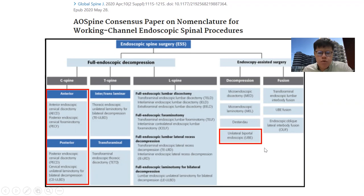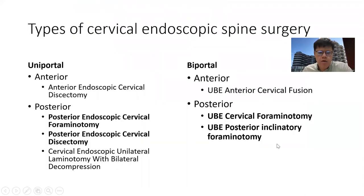In biportal spine endoscopy, they are mainly mentioned as UBE. However, there's actually more granularity than that. There's also UBE cervical foraminotomy and UBE posterior ipsilateral foraminotomy on top of UBE anterior cervical fusion, which is essentially a very new procedure that's being performed.